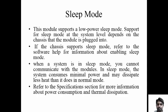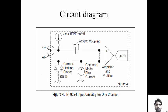The NI9234 dissipates very low power with minimal thermal dissipation. The circuitry includes AC/DC coupling and a 24-bit delta sigma ADC converter that converts analog signals to digital signals. The main purpose of this DAQ system involves three modules: the sensor and channel input, signal conditioning, and the ADC converter. The sensor converts physical phenomena into an analog signal, which is then passed to the DAQ system for processing.